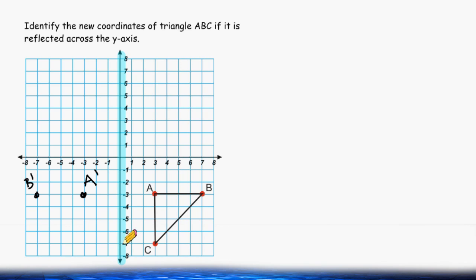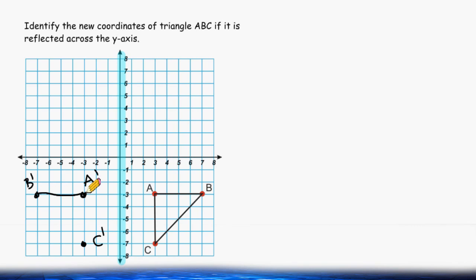Point C is three units to the right of the y-axis, so we have to move three units to the left of the y-axis. Next, we can connect our points together to form our reflected triangle.